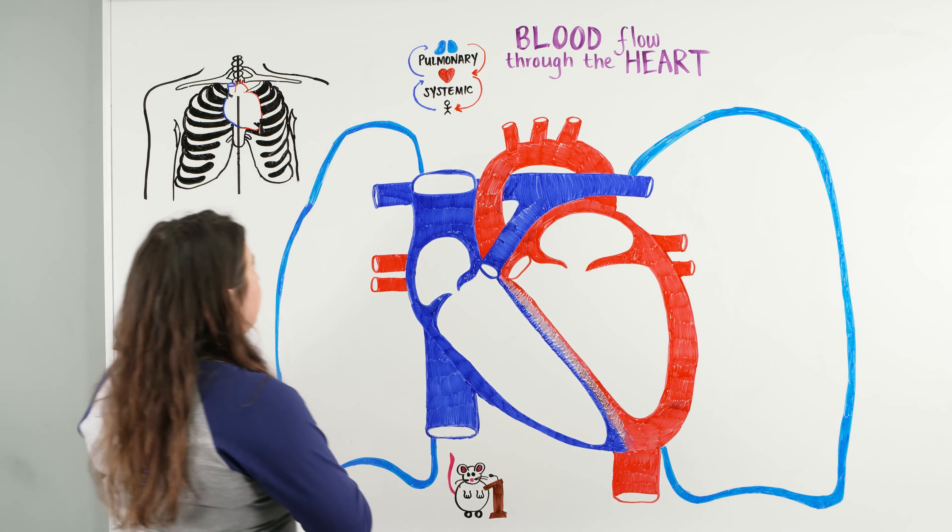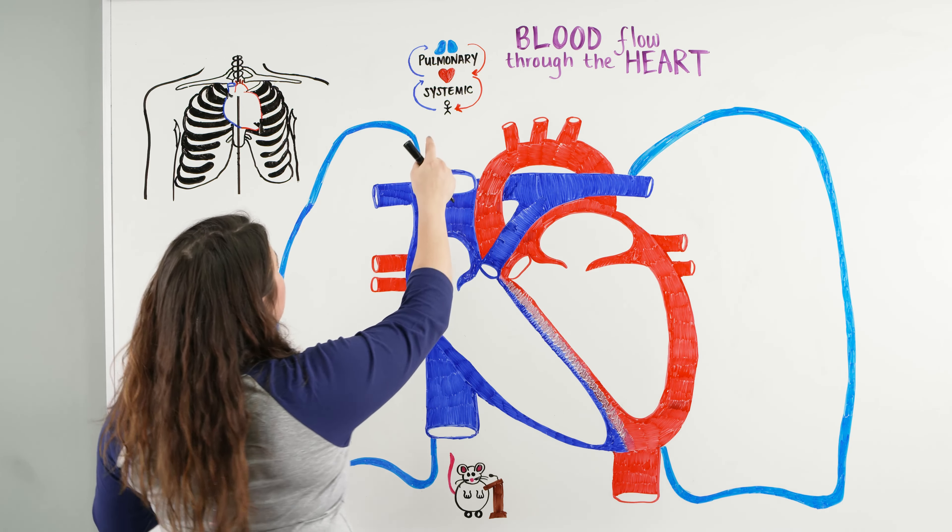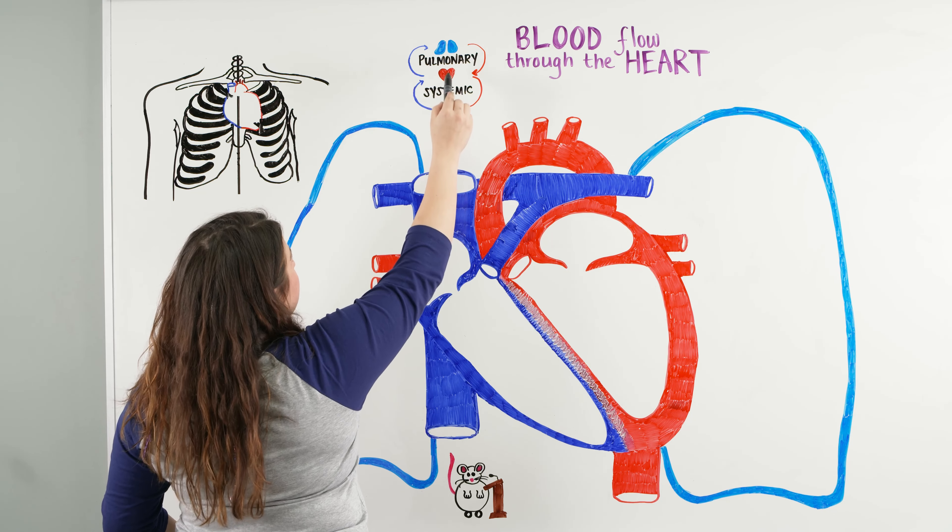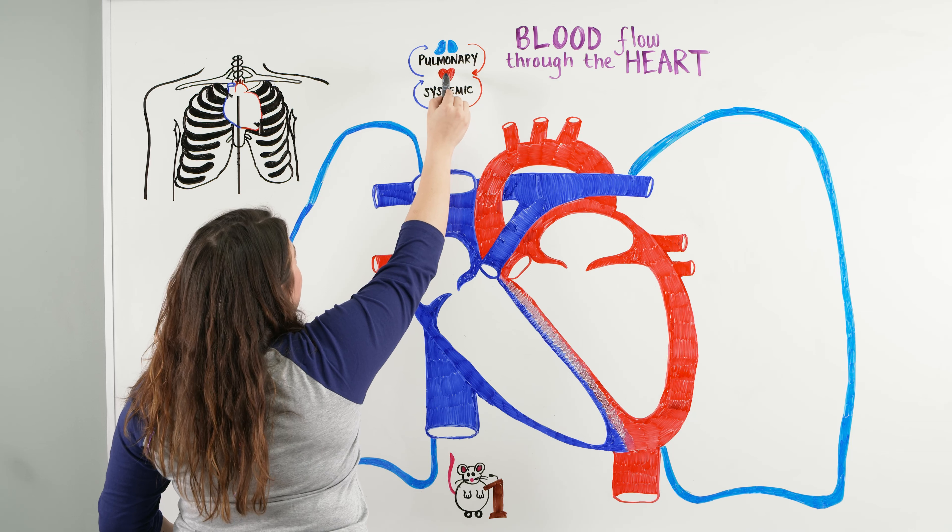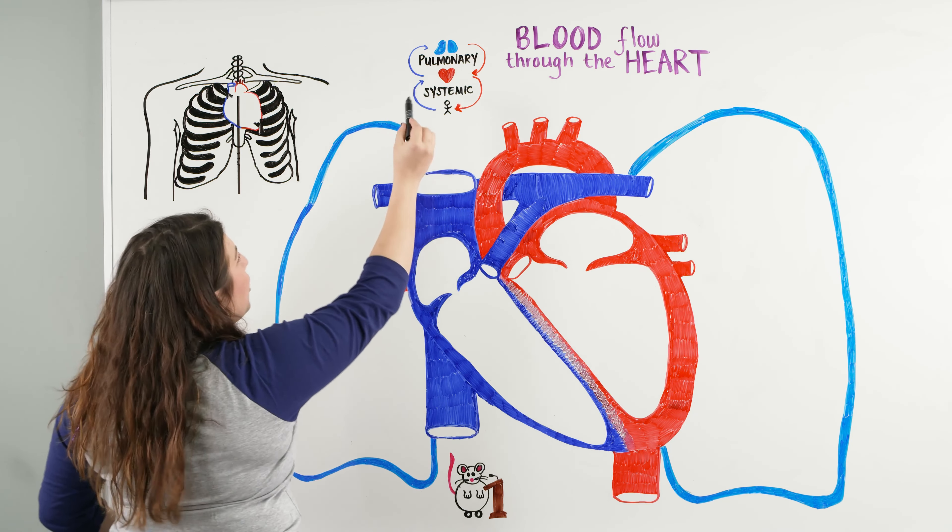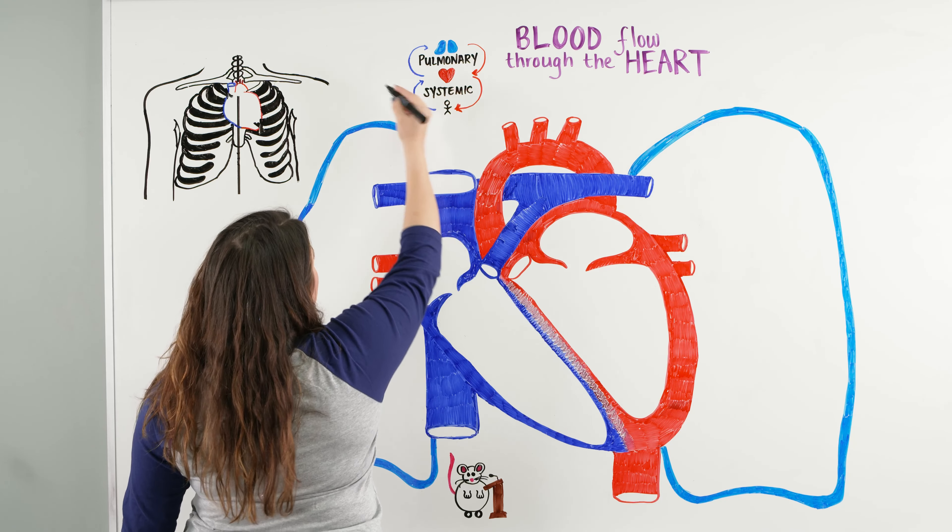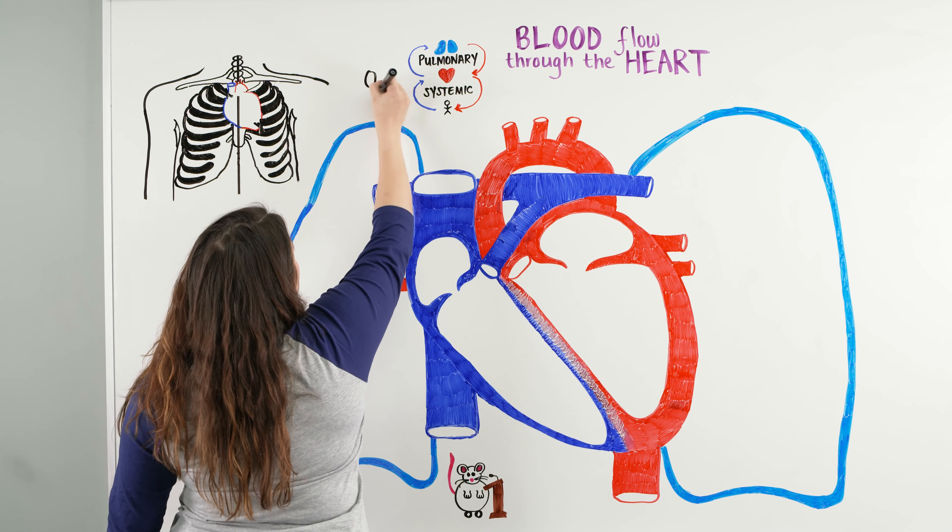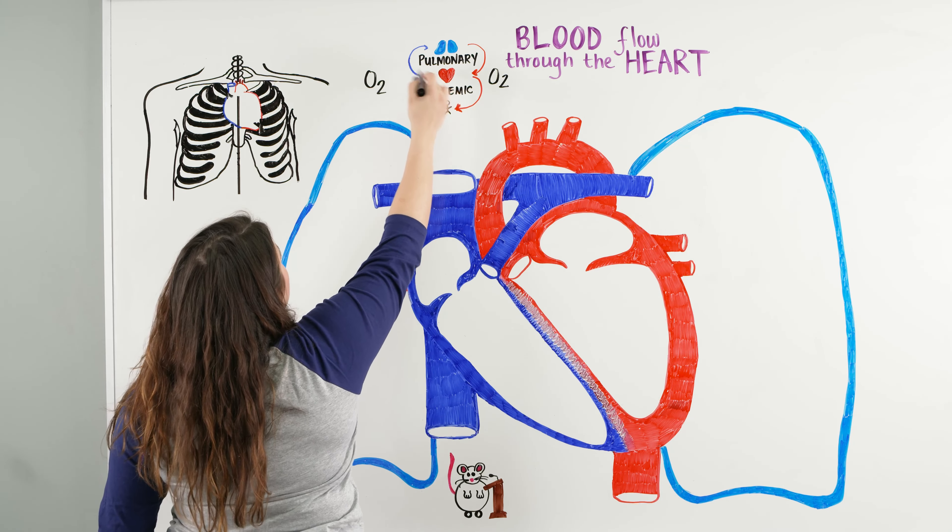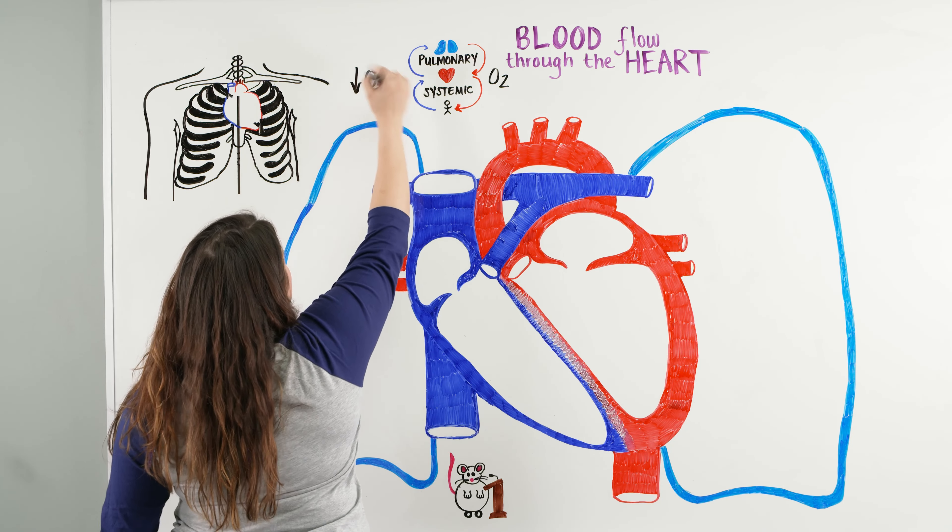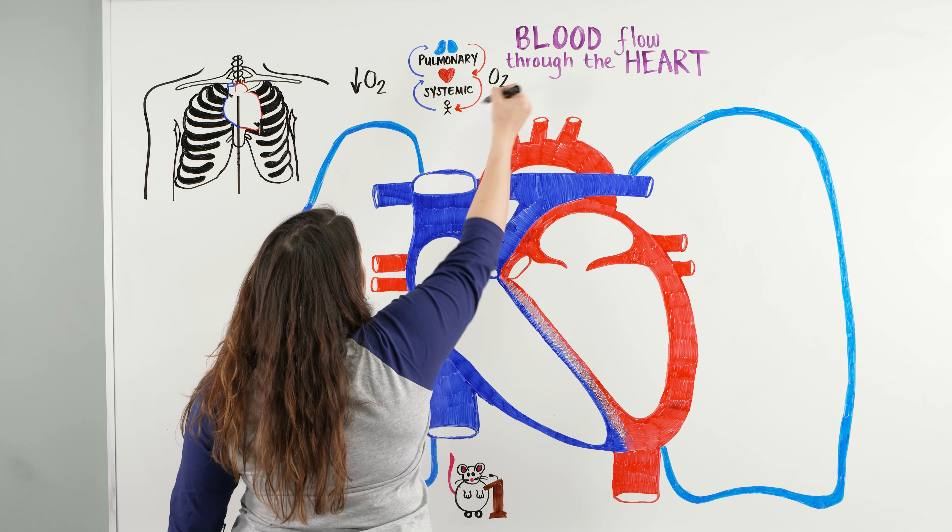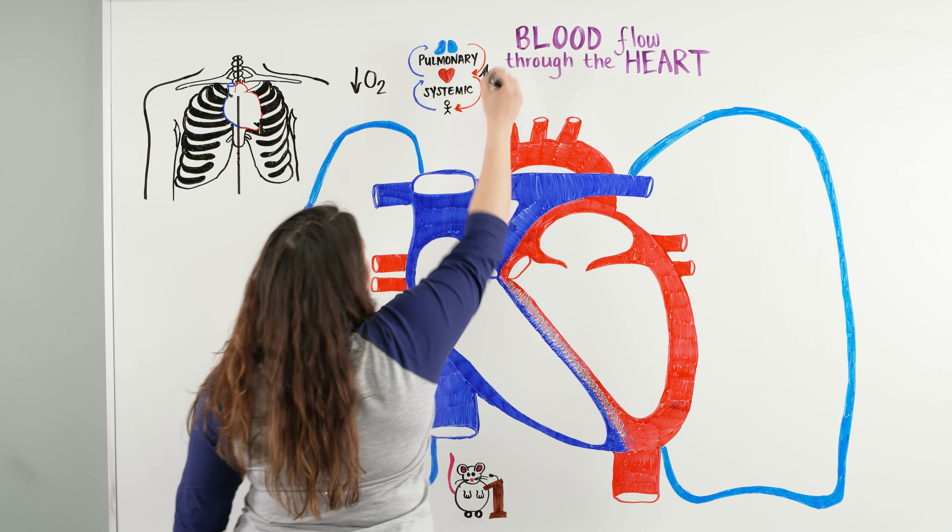So, blood flow through the heart. We have pulmonary and systemic circuits. Remember that there's basically two loops that the blood has to go through. It has to go from the heart to the lungs back to the heart, and then from the heart to the rest of the body and back. The purpose of this is to have oxygenated blood. When it goes from the heart to the lungs, it's deoxygenated blood, so that when we're at the lungs we pick up oxygen, and then bring it to the heart and go out to the body.